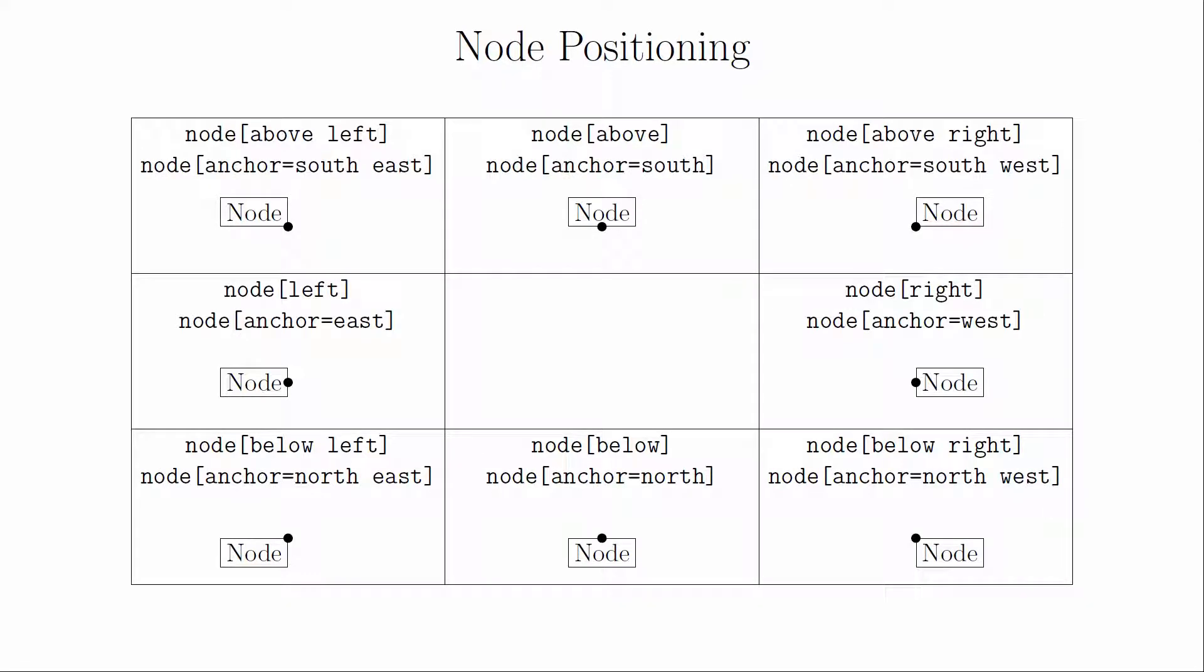There's another notation for this, thinking about the node's coordinate as an anchor point, and then describing the corner of the text box where we want the anchor point to be. You can also use the center as an anchor point. I usually use this notation, but I've noticed that people find it to be counterintuitive. Pick the one that makes sense to you.